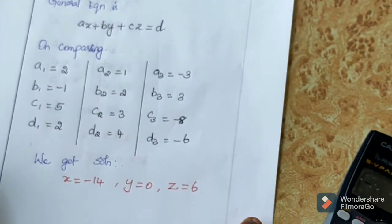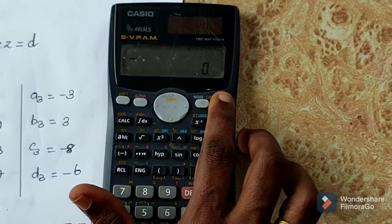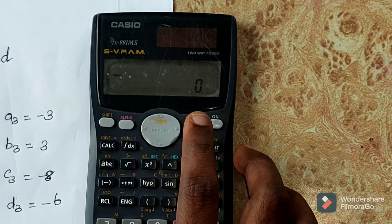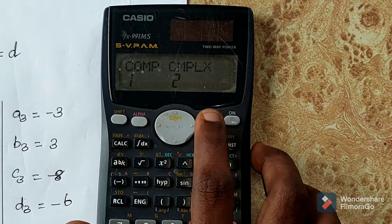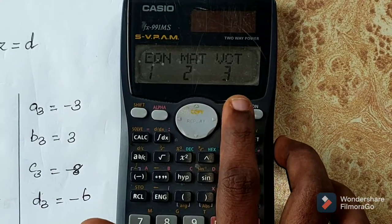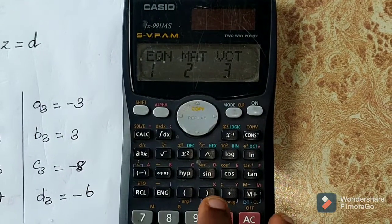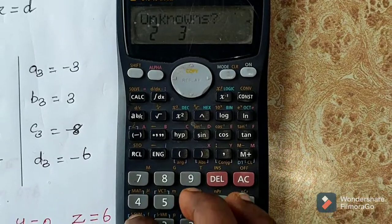Now we will use the calculator. First switch the calculator on. To access equation mode, press the mode button, then press 1.